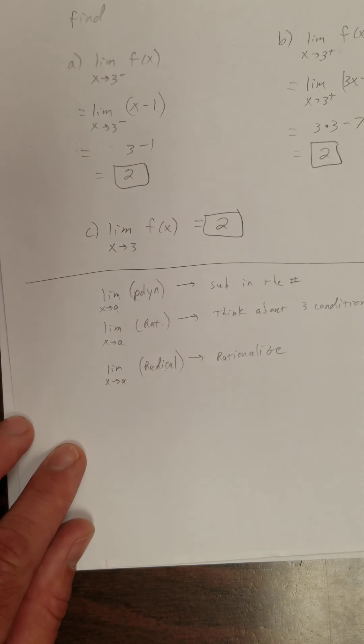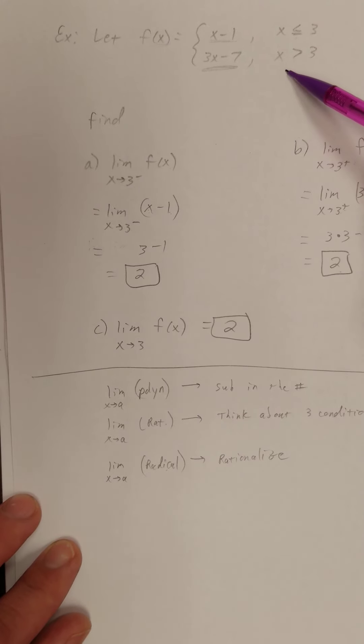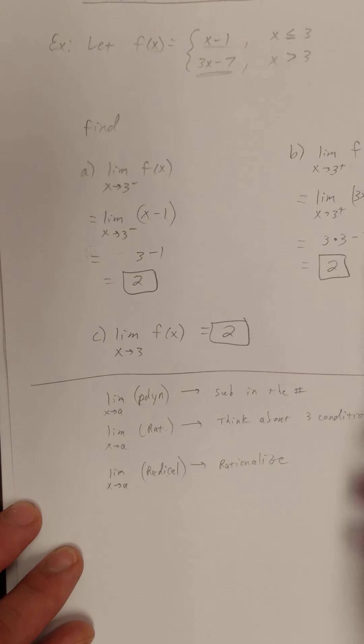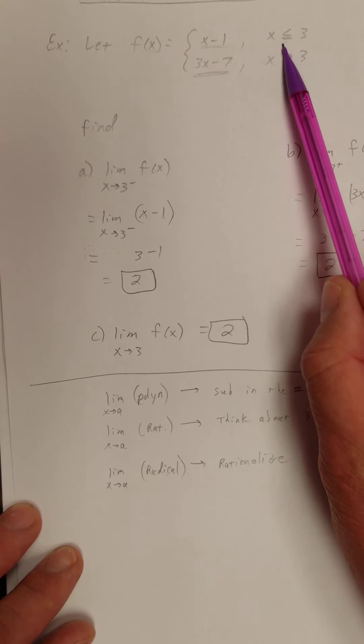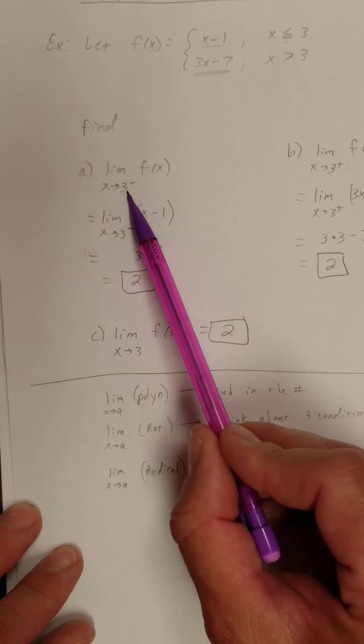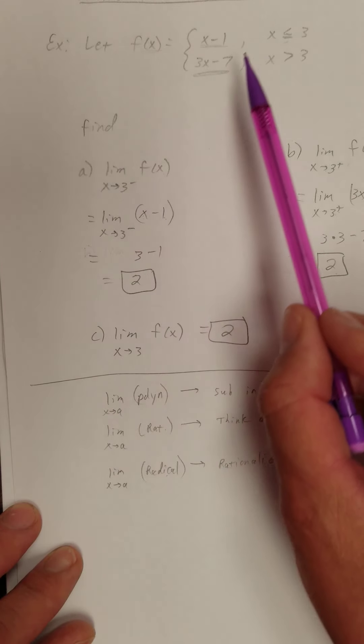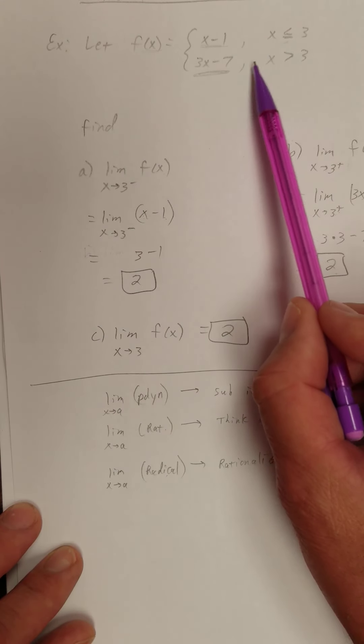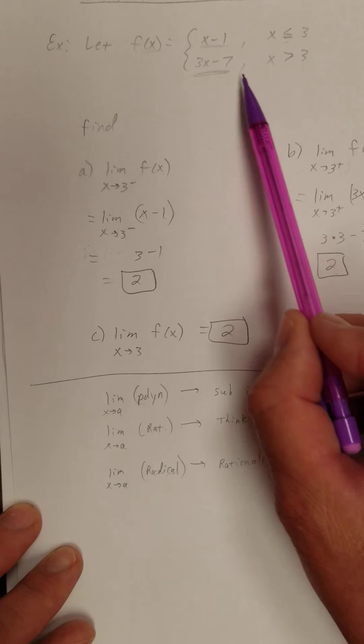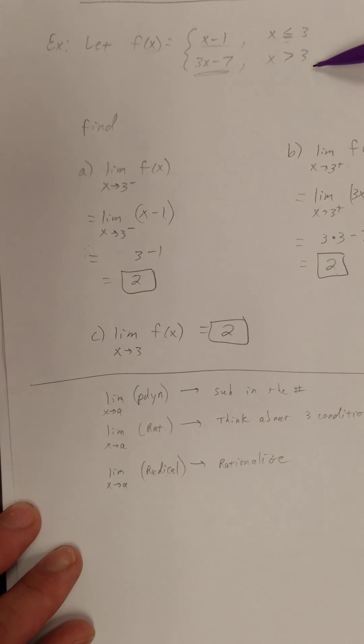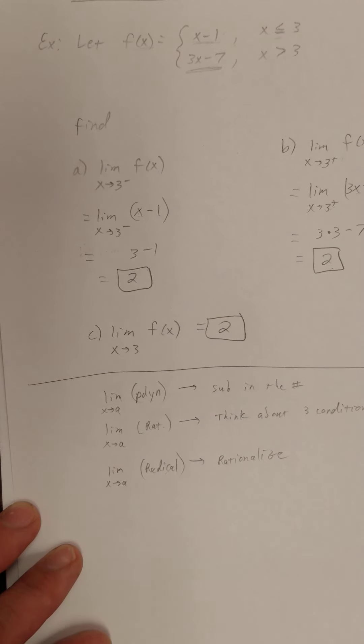And then, what else did we deal with? We dealt with piecewise just now. What did we do with piecewise? Well, for piecewise, we basically look, okay, what is that value of x? And if we're approaching 3 from the left, we would use that part. If we're approaching 3 from the right, we use that part. So with piecewise, we basically determine which piece we have to use for which part.